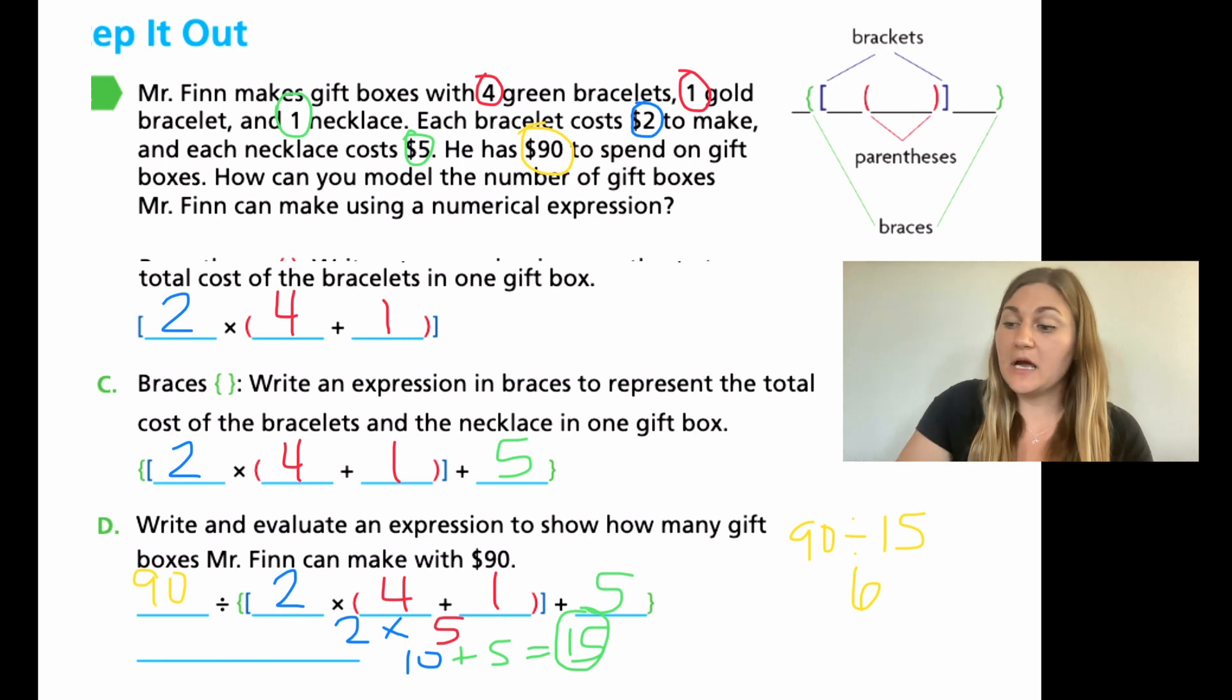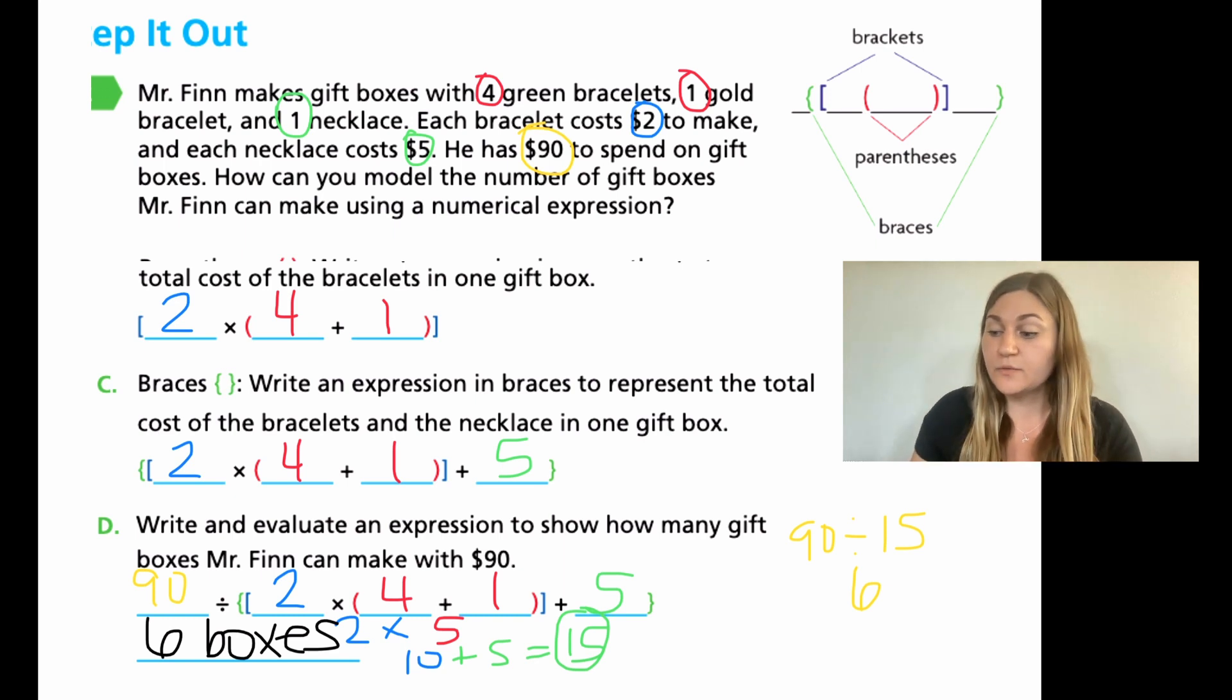Knowing going back up to the problem, how many boxes can I make for my $90? I can make 6 boxes. That is just an example of how to work with a different type of parentheses, brackets, and braces inside of step one of the order of operations. That is it for this lesson. Go ahead and finish up the rest of the problems, and I will see you for module five.